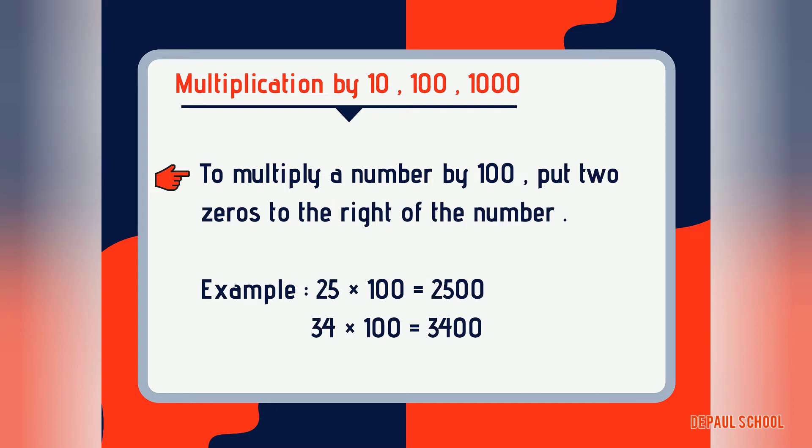When we multiply a number by 100, we add two zeros to the right of the number. For example, 25 multiplied by 100 — we write 25 and put two zeros to its right, giving the answer 2500. One more example: when 34 is multiplied by 100, we get the answer 3400.